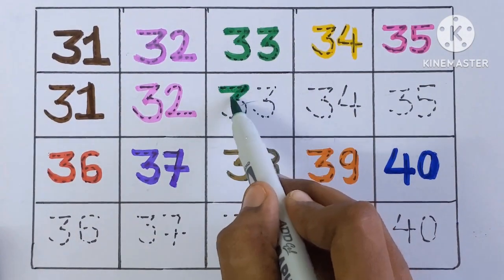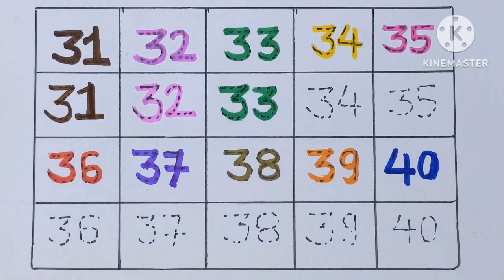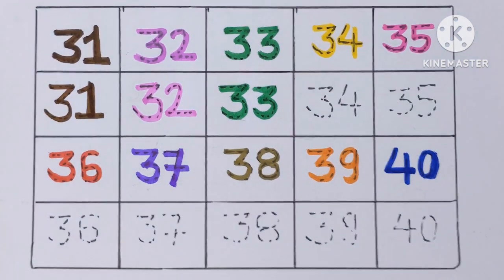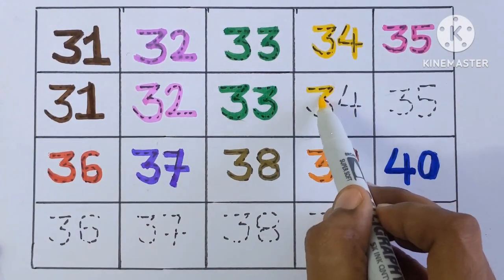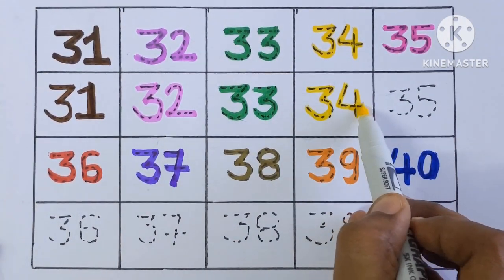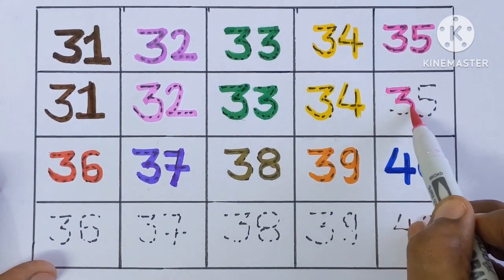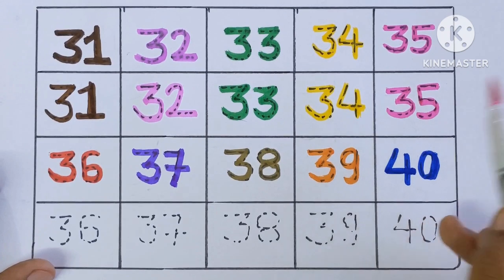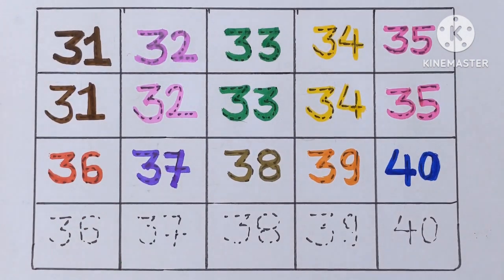33, 33, dark green color. Next number is 34, 34, yellow color. 35, 35, pink color. Next number is 36.